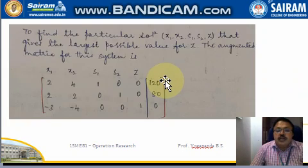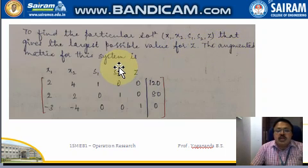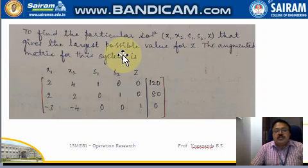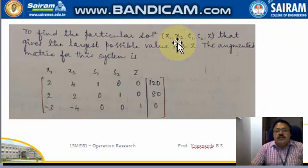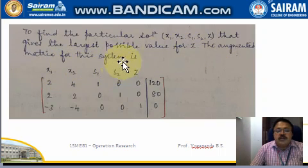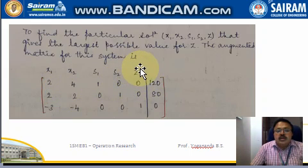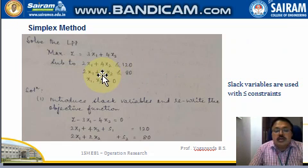Now to find a particular solution for the variables x1, x2, s1, s2, and z — where z is the objective function that gives the largest possible value — we need to find which values of x1 and x2 will maximize z. The augmented matrix for this system has columns for x1, x2, s1, s2, and the objective function z.